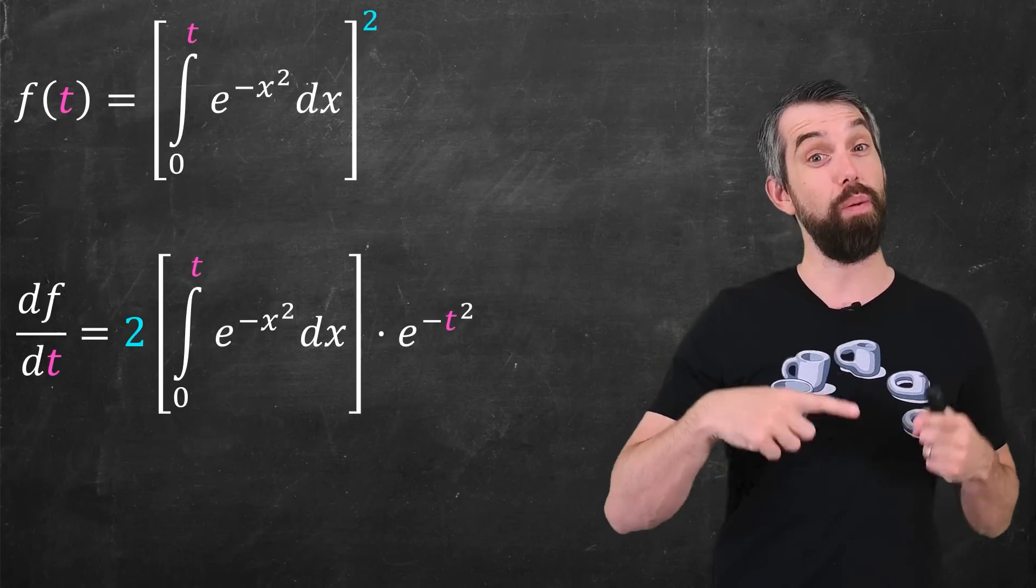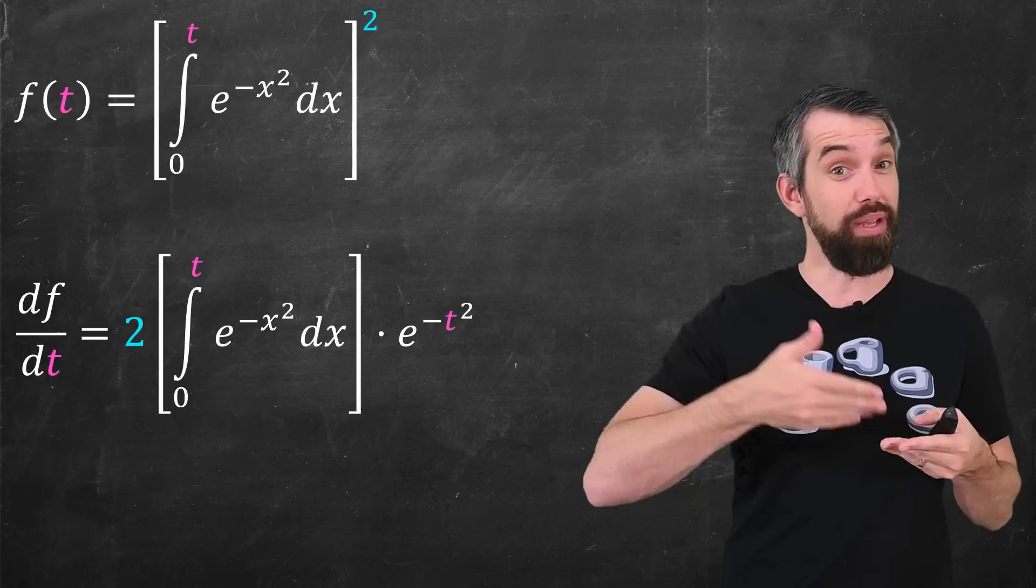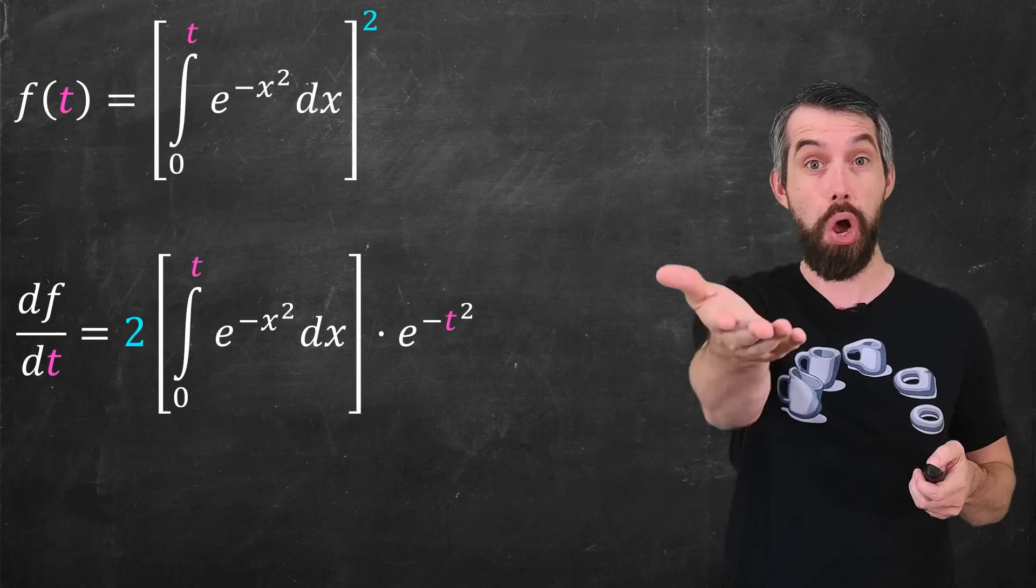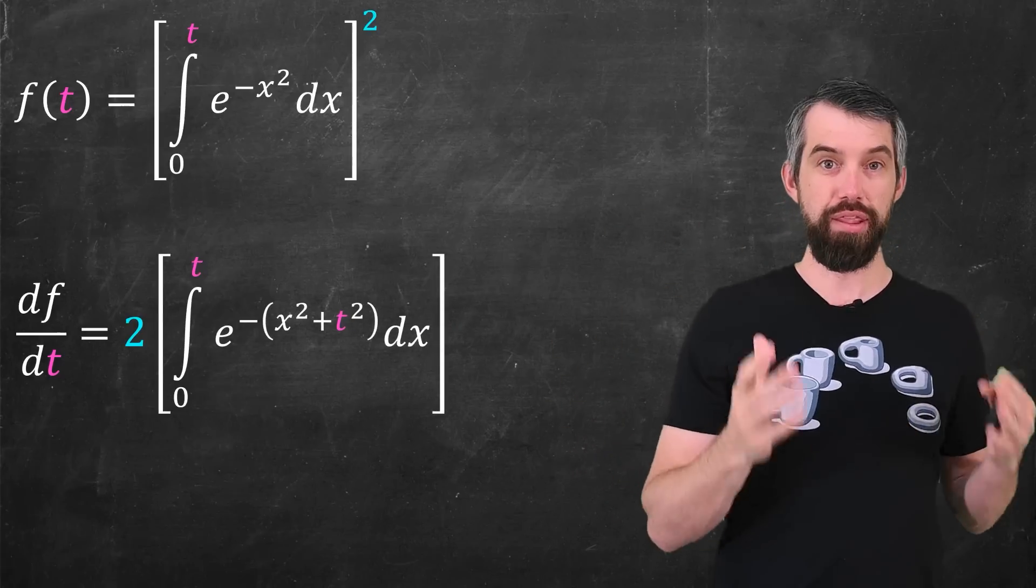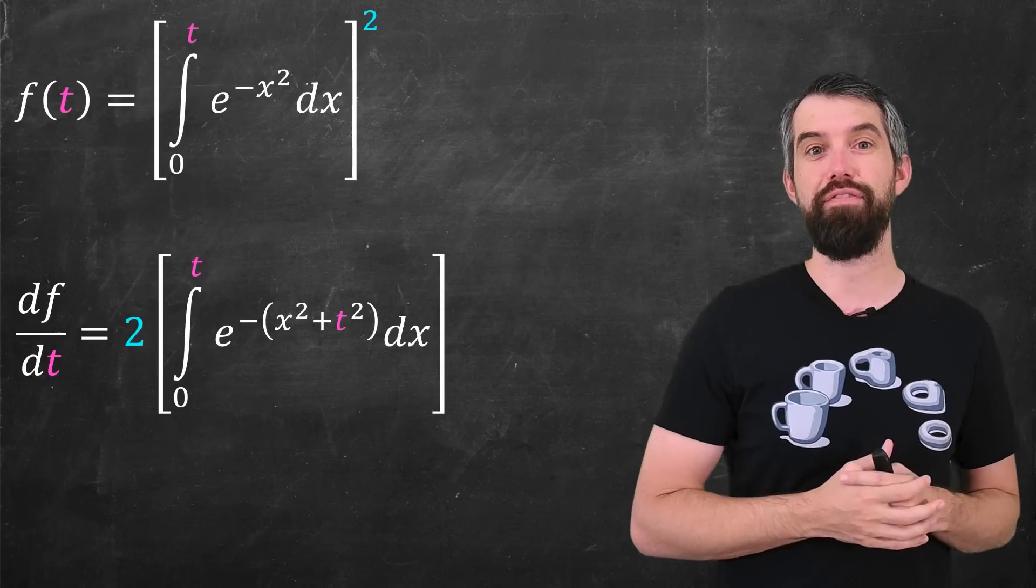I still have an integral, but my integral is with respect to x. So e to the minus t squared is just a constant. I can move that inside the integral, and thus I claim my derivative of f is this.